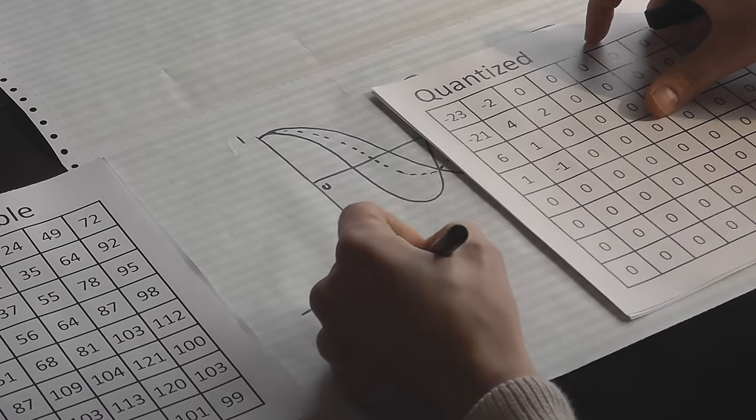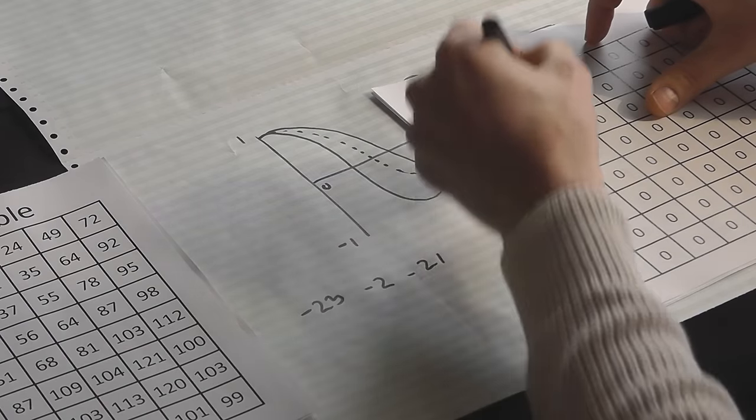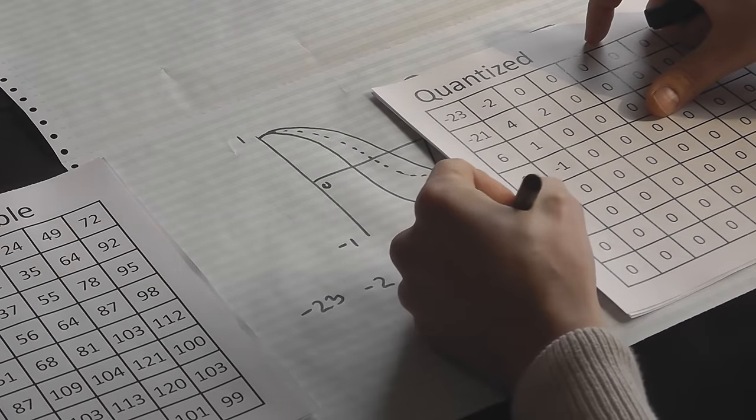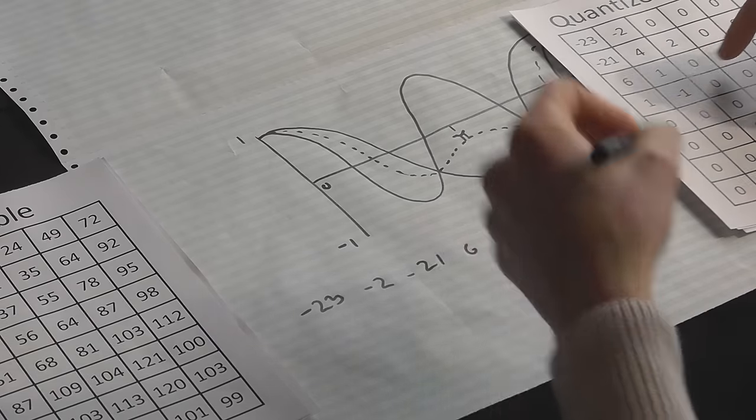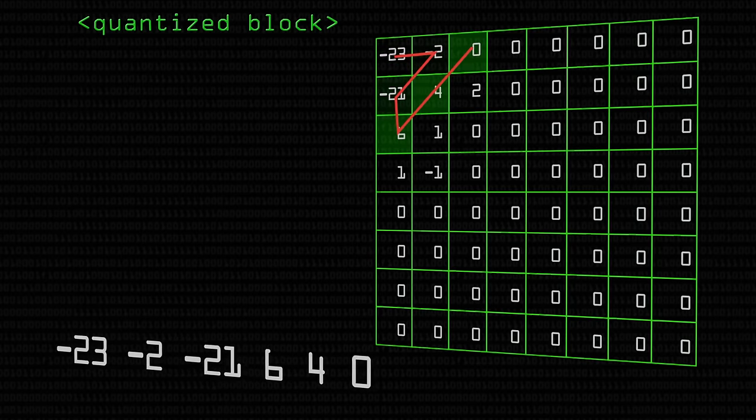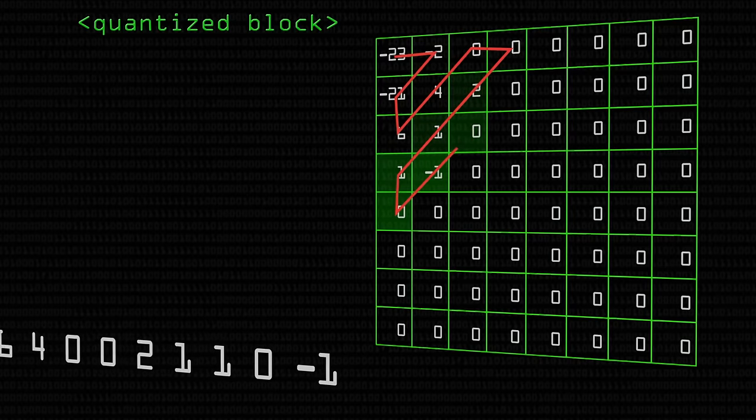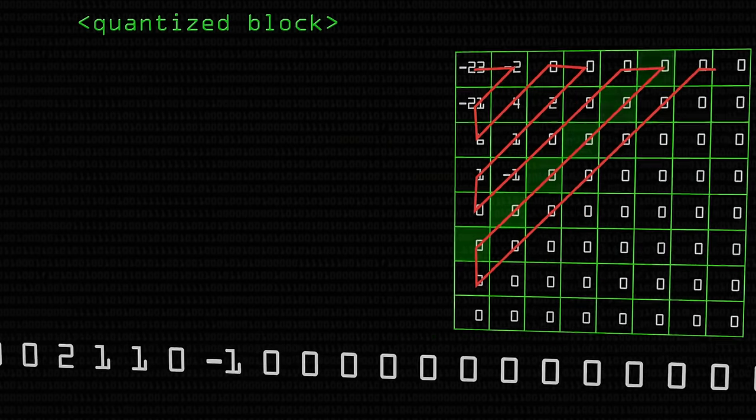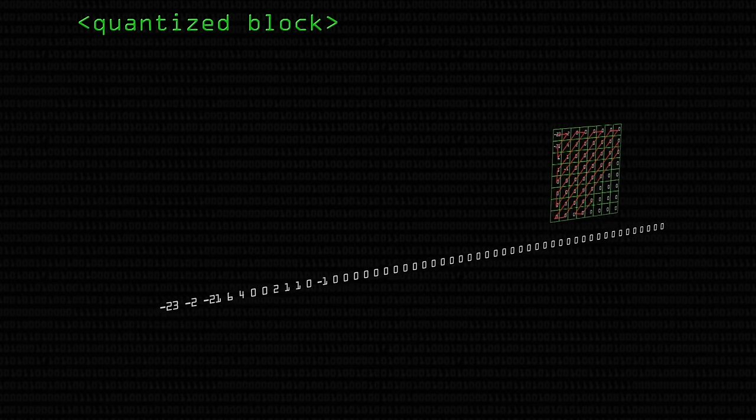The way that we serialize this into our file is in a zigzag fashion. So we start with minus 23, then we go minus 2, minus 21. So we're going up and down, up and down, 6, 4, 0, 0, 2, 1, and so on. And the important thing about this is, by doing this, we're going to get a huge list of noughts all in a row. And that is very easily compressed by Huffman encoding.